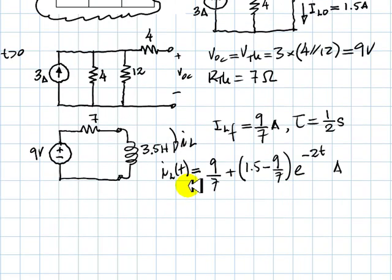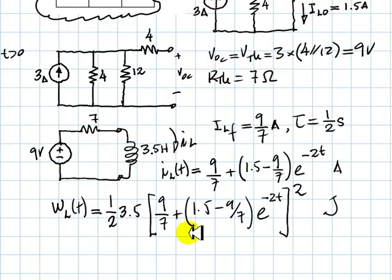If we square that current, multiply that times L 3.5H and divide by 2, we get the energy in the inductor also as a function of time. You can simplify that expression or leave it like that. And that is the solution to question number 3.